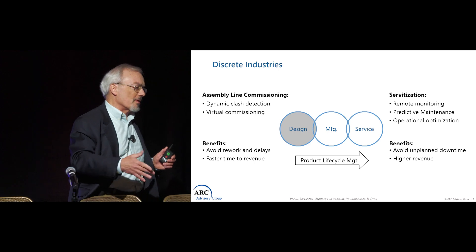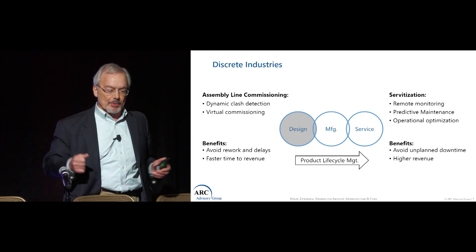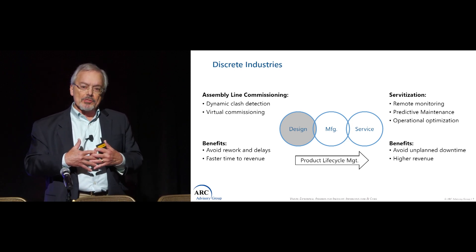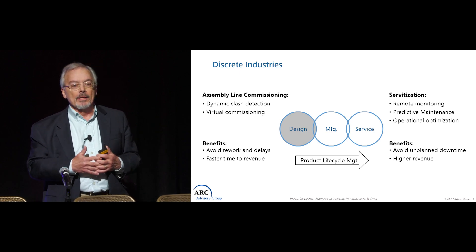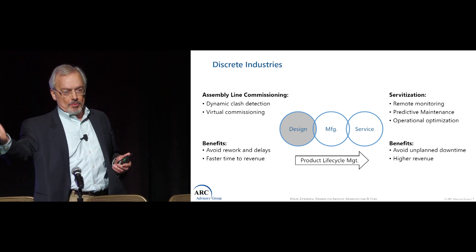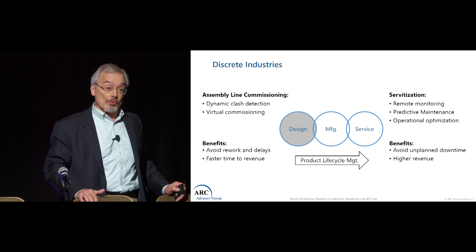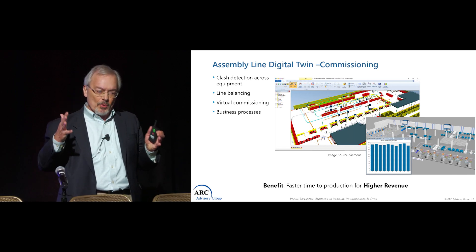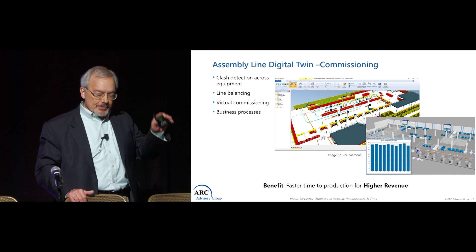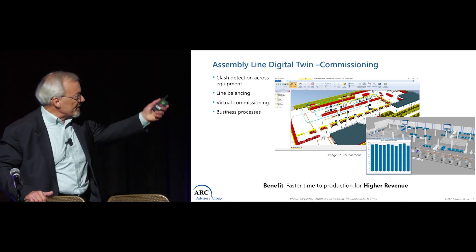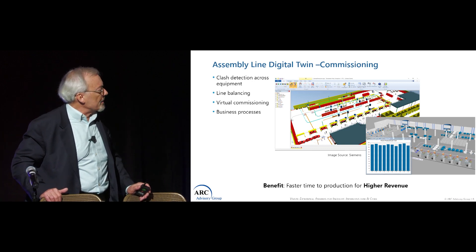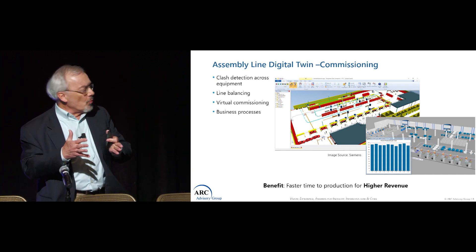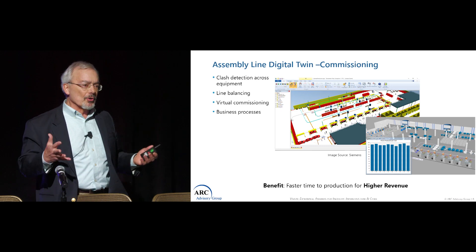Virtual commissioning avoids rework, delays, and enables faster time to benefit — meaning the plant comes on sooner. After manufacturing, we see digital twins applied to the product rather than the assembly line, with servitization — remote monitoring that tells the client when something's not going right. One particular example comes from Siemens, who's big into digital twins for assembly plants; the one on the left is for an automotive assembly line.